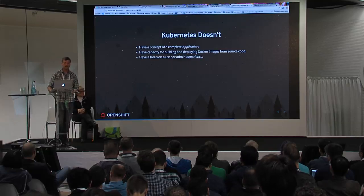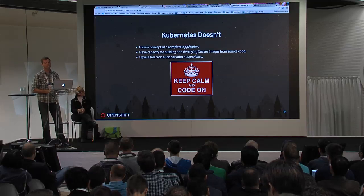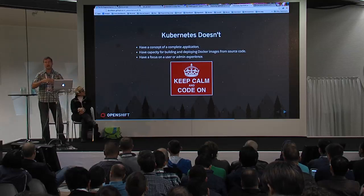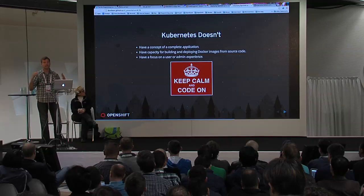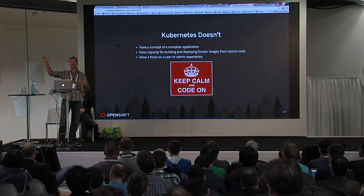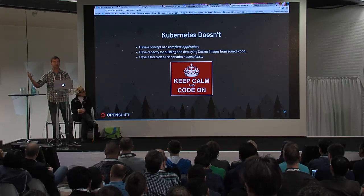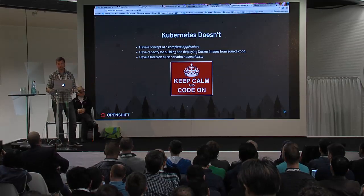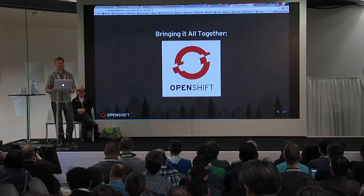Kubernetes does a lot of awesome things, but there are things it doesn't do. Kubernetes is really good at managing containers at scale. It doesn't really address how to take an application and manage it through its entire lifecycle — how to take application source code and turn that into a running application. That brings us to OpenShift, bringing it all together.